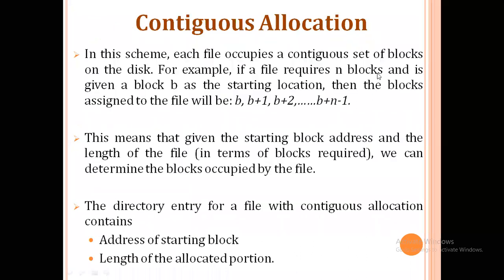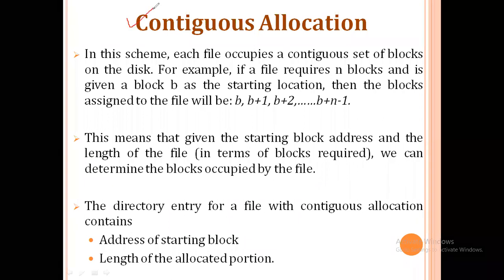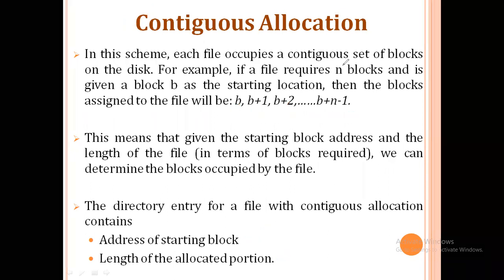Let's see the three types of allocation methods. First is contiguous allocation — the name means continuous allocation. If our first file block is stored in location B, the next block will be B+1, the next block will be B+2, and so on. The directory entry of contiguous allocation contains the name of the file, the starting location address, and the length of the file.